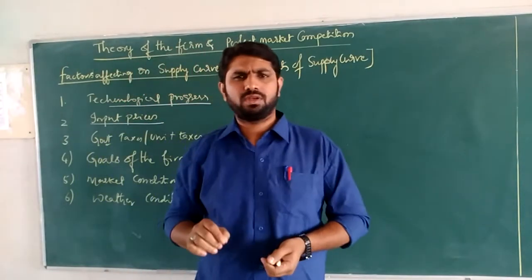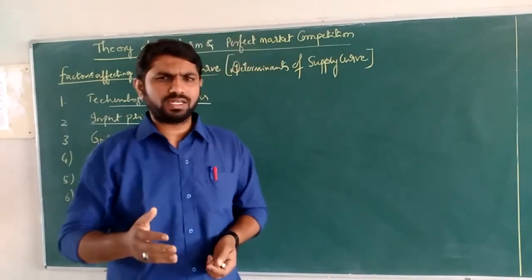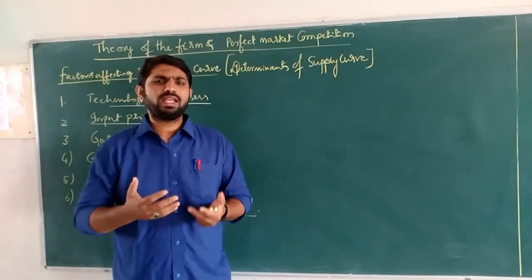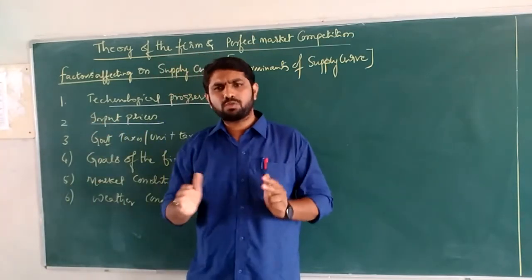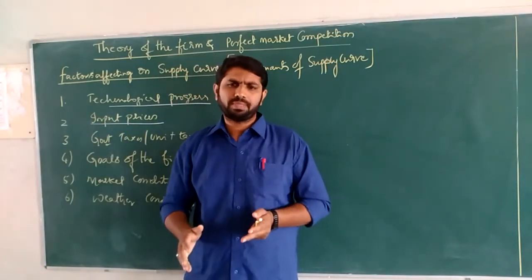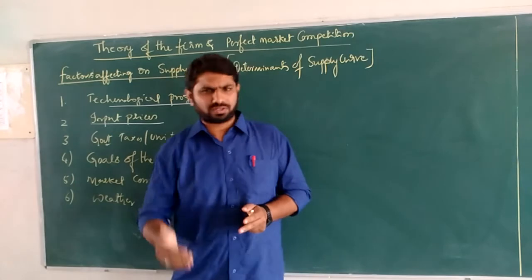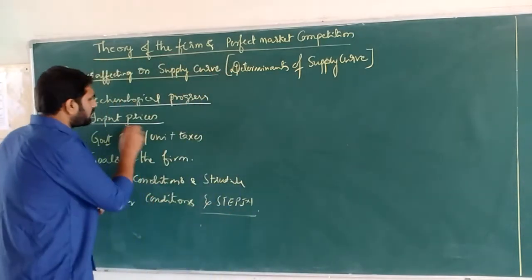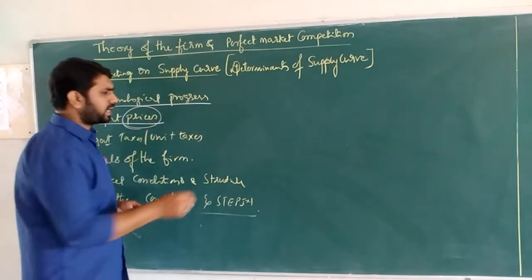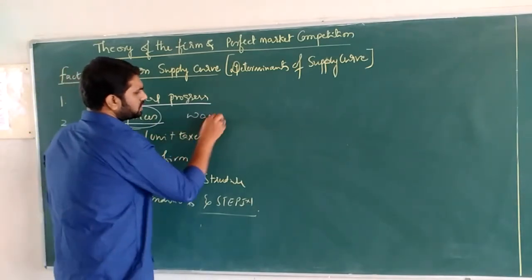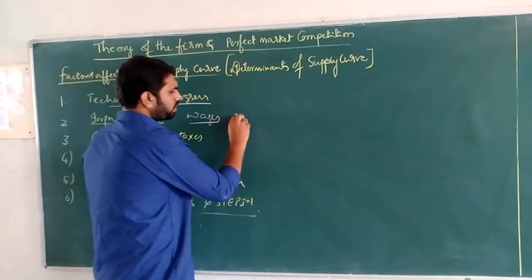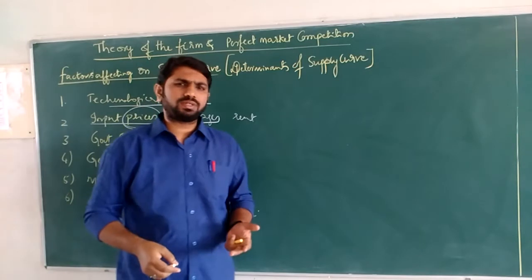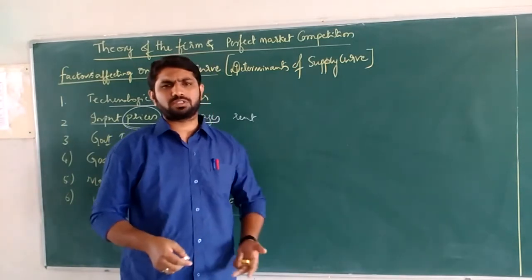Let me explain with a small example. The factors of production are land, labor, capital, and organization. The way in which we buy these factors required for any production activity is called factor costs or input costs. Like what we pay wages to labor, rent to land, interest on capital, and profit to the owners of the organization.